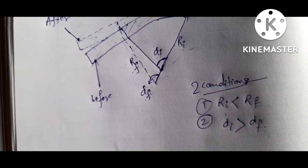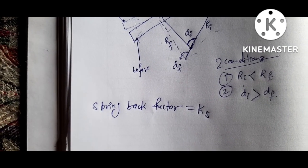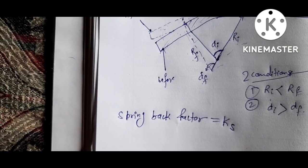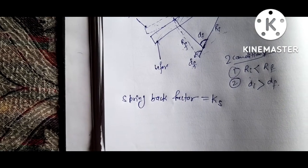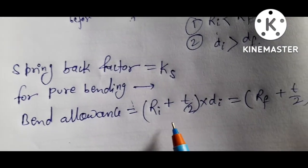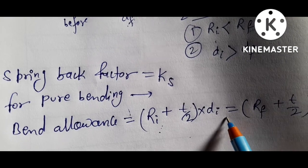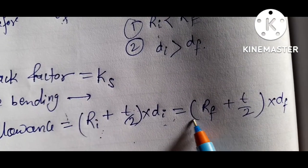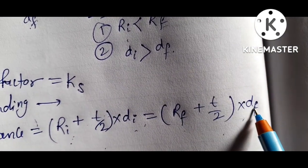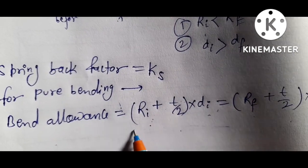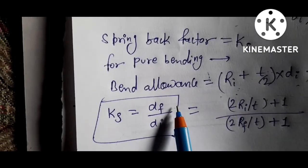So there are two cases. The spring back factor Ks is determined assuming bend allowance is the same before and after bending. The relation obtained for pure bending is: bend allowance equals RI plus thickness divided by 2, multiplied by initial bend angle; and also equals RF plus thickness divided by 2, multiplied by final bend angle.